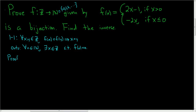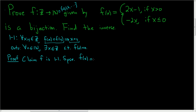Proof. We'll start by showing it is 1-to-1. Claim: f is 1-to-1. To show it's 1-to-1, we have to assume that f(x) is equal to f(y), and then we have to show that x is equal to y. So suppose f(x) is equal to f(y) for some x, y in the set of integers.